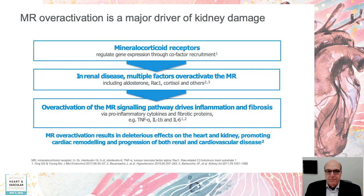Enter the mineralocorticoid receptor blockers. Aldosterone is specifically known to be elevated in people with diabetes. The visceral adipocytes produce and release aldosterone — so the more obese you are, the more likely you are to have elevated aldosterone floating around. Aldosterone has a narrow therapeutic window: it's a great hormone, but too much of it increases fibrosis, both in the heart, kidney, and blood vessels. This is a very important point to keep in mind in people with type 2 diabetes.